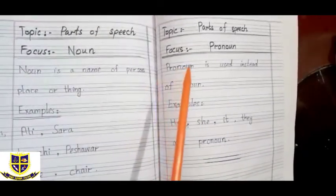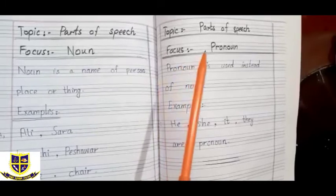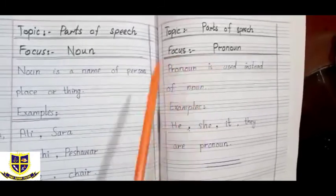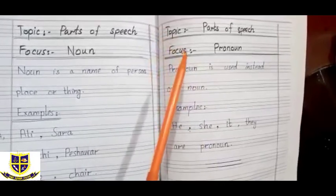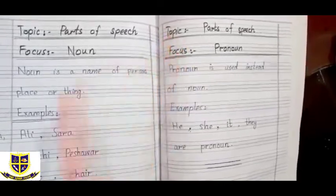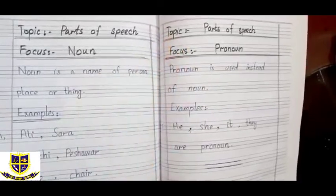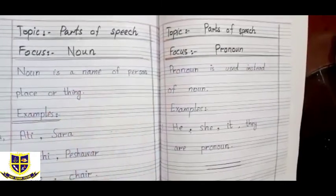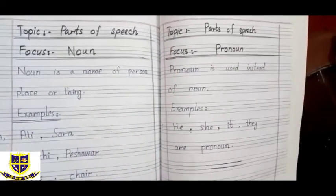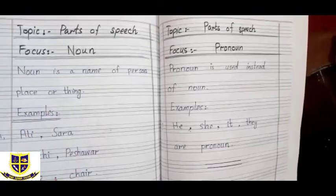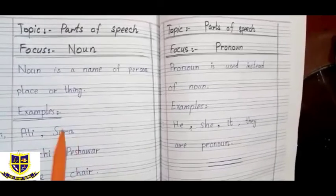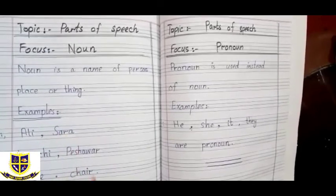Our next topic is pronoun. On the next page, write the same topic: parts of speech. The focus is pronoun. Don't forget the double underline on the focus and topic. Write the complete date, and then write the topic and focus. Kindly follow the Nelson writing style — it will be good if you write it in Nelson writing.